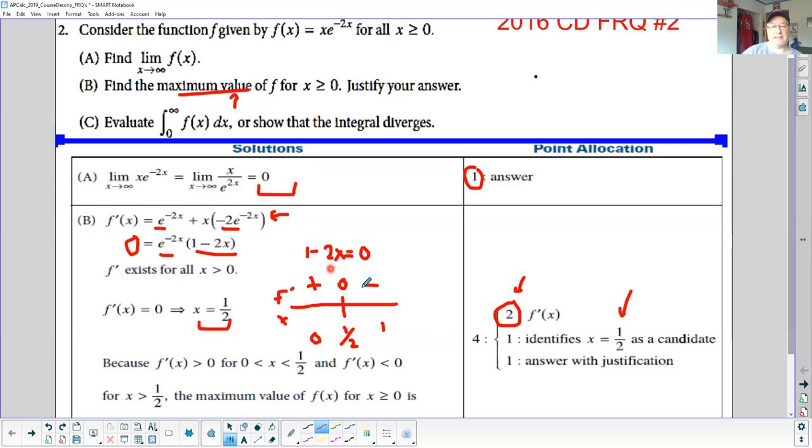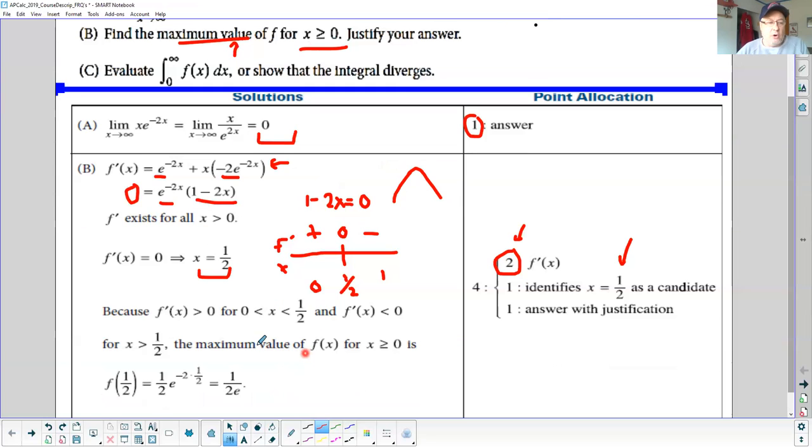This is the only candidate. Don't forget x has to be greater than zero. If I check like 0.25, you're going to get a positive value, which tells you the function's increasing. When the derivative is negative, like checking one, you're going to get a maximum. It is the only maximum, so you really don't have to do candidate tests.